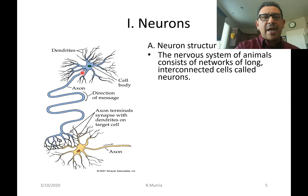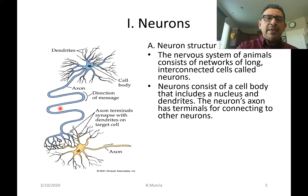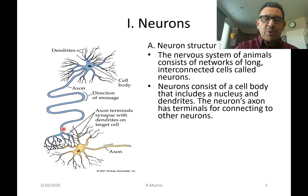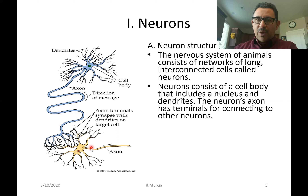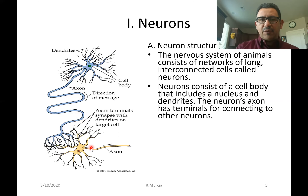Neurons also have a long process known as the axon. The axon is a way of passing electric potentials, which carry information from one neuron to another, or from one type of sensory structure to another part of the nervous system of the animal.